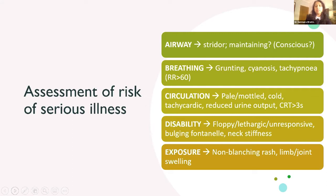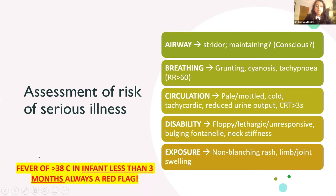In babies, meningeal signs may present as generalised truncal stiffness — pick them up and the child is rigid and straight. E is for exposure: fully expose the child within reason, look for non-blanching rashes, limb or joint swellings indicating septic joint, or patches of cellulitis. A blanket rule: fever over 38°C in an infant less than three months is always a red flag and these children usually need to be seen by the paediatric team for a septic screen.